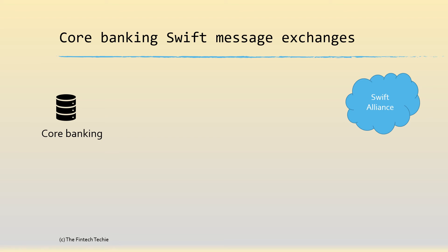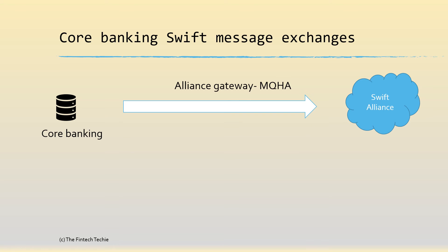Now, coming back to how technically the message exchange happens for these three services: first, we have the Alliance Gateway, which uses a messaging hub called MQHA — the IBM WebSphere MQ Host Adapter. Using a series of queues, messages are transformed and transferred from the core banking to the Swift Alliance. If it becomes complicated, you can outsource it to a Swift Bureau, and now there is also the Alliance Cloud as a third option.